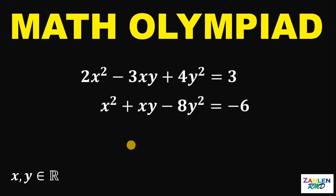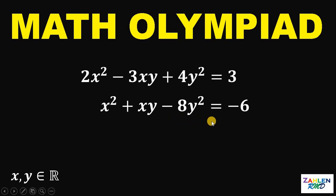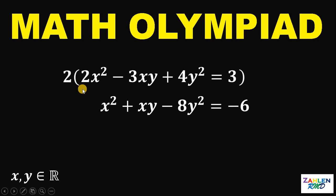Time's up. Now let's answer this question together. We are given two equations: 2x squared minus 3xy plus 4y squared equals 3, and x squared plus xy minus 8y squared equals negative 6. The first thing to notice is if we multiply the first equation by 2, this will give us 4x squared minus 6xy plus 8y squared equals 6.